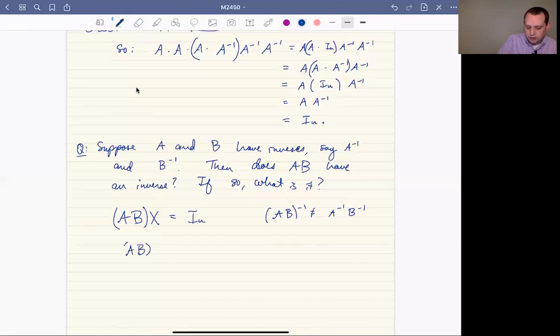AB inverse is going to be B inverse times A inverse. That's the right order that you have to multiply things in in order to cancel A times B. And so let's just check that that's the case.